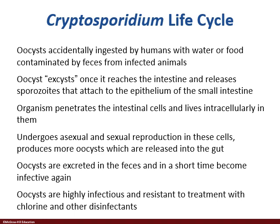You ingest a cyst through fecally contaminated water or food — whether it's human feces or farm waste that gets into the water table or a potable water source, which has happened. Or you're out hiking and swimming and get a mouthful of stream water. The oocyst passes through the stomach relatively intact and gets into the intestines.